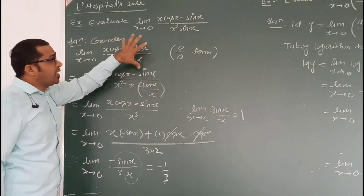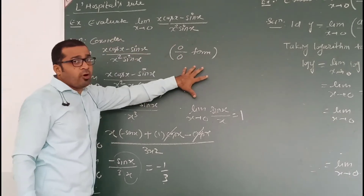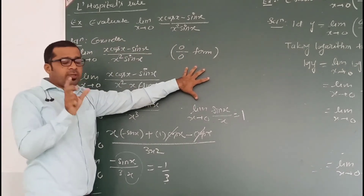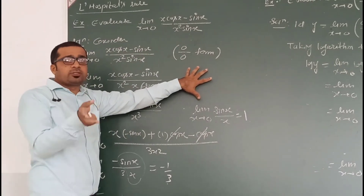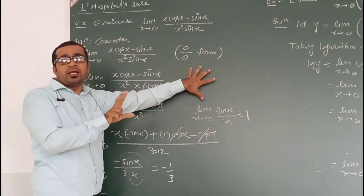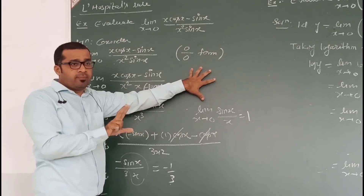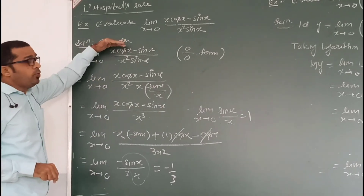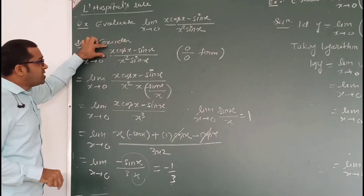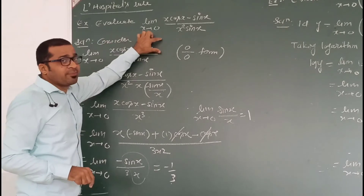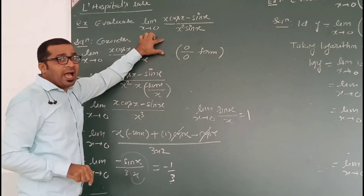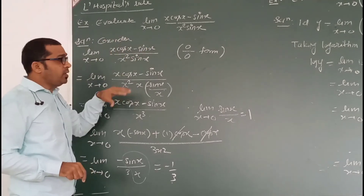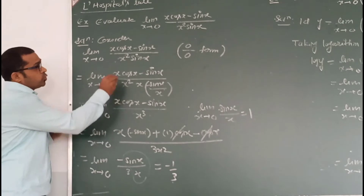Whenever we get the 0 by 0 form, L'Hospital's rule is applicable for that 0 by 0 form particularly. In L'Hospital's rule, what we do is differentiate the numerator separately and the denominator separately to get the function value.